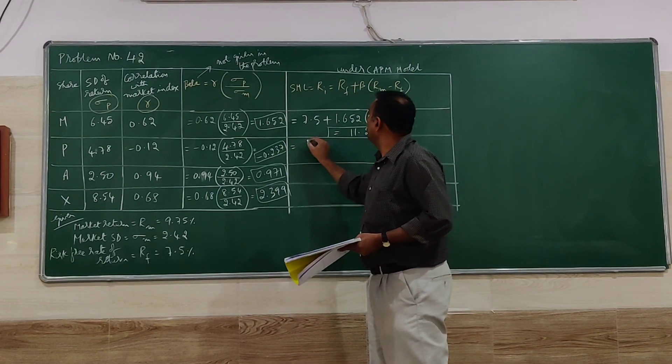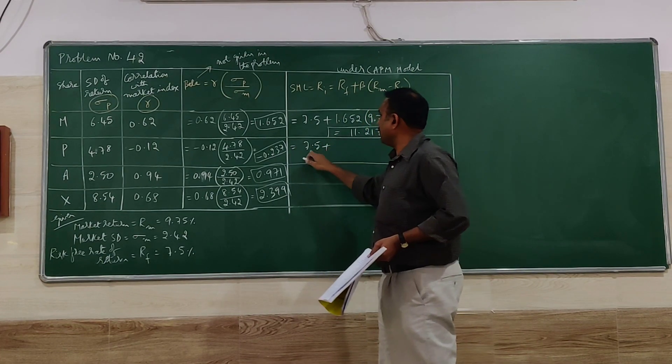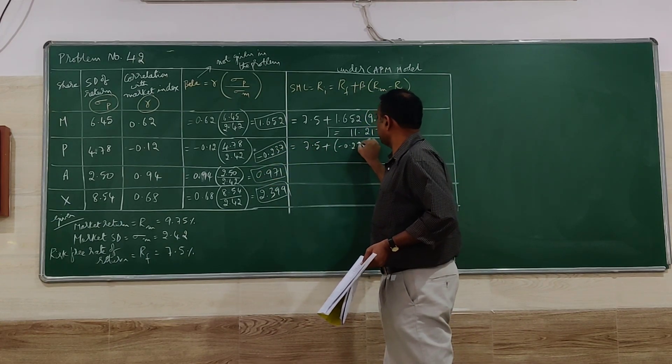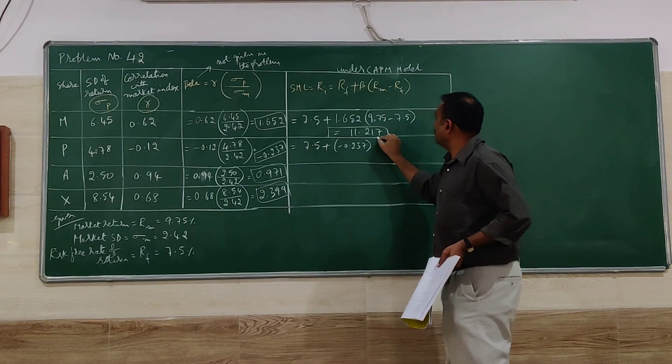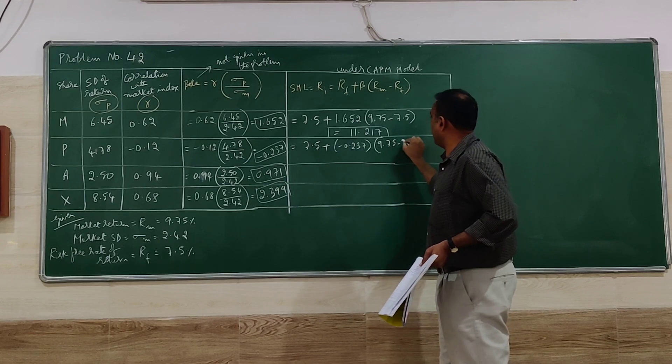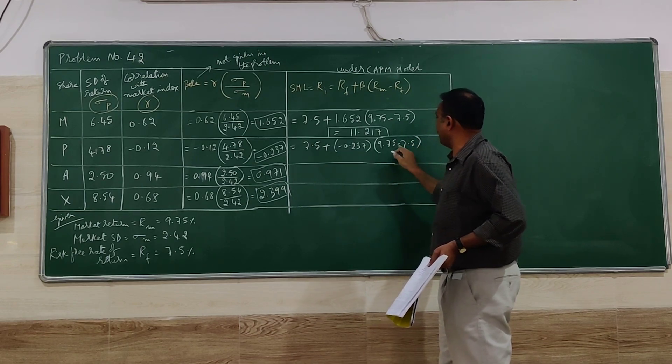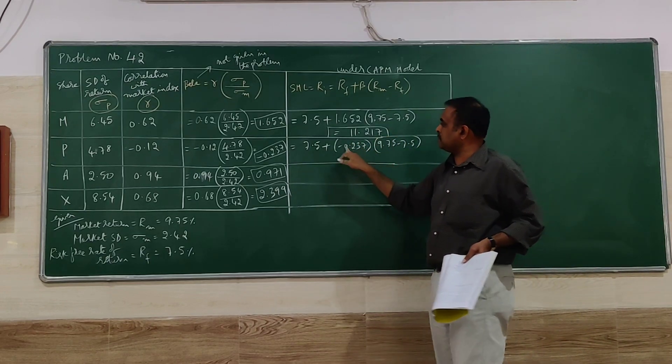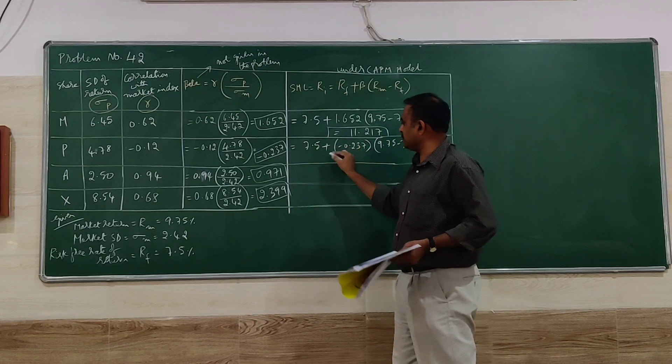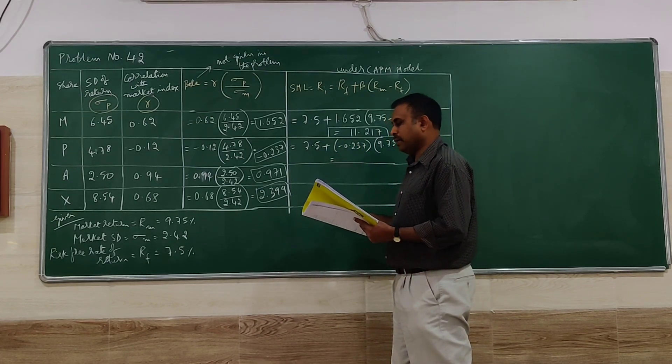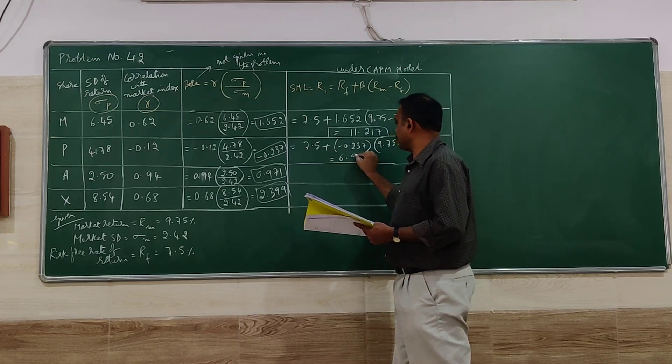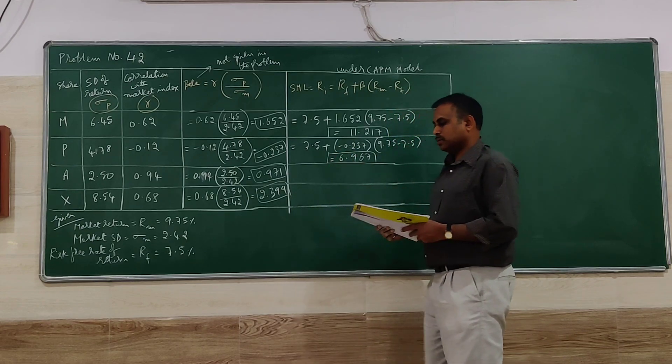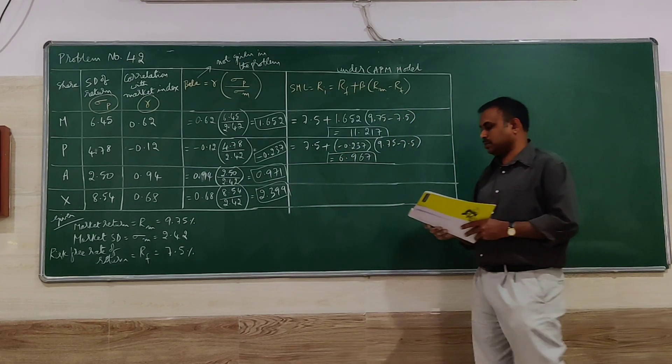Next, 7.5 plus beta value is in minus. That has to be again multiplied by 9.75 minus 7.5. So this minus this, multiply this, you get in minus. So 7.5 minus that value. The value will be in plus: 6.967. You have to be careful when having minus values.